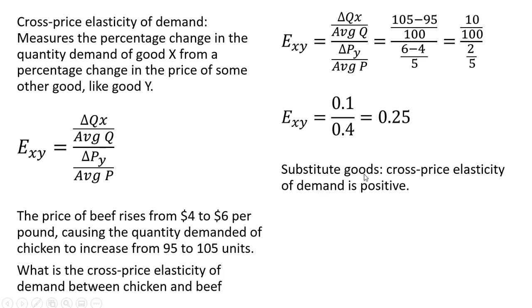Because we're dealing with substitute goods here, the cross-price elasticity of demand is positive. So roughly speaking then, a 1% increase in the price of beef causes the quantity demanded of chicken to rise by one-fourth of a percent, 0.25%. Let's do another example.